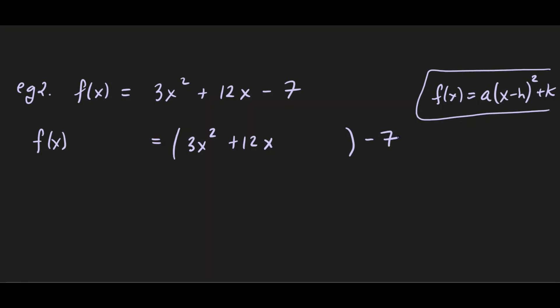We can't complete the square yet because we need to make the coefficient of x² equal to 1. Since it's 3, we have to factor out that coefficient from the first and second terms. Pulling out a 3 gives us 3(x² + 4x), since 3 × 4 = 12. Minus 7 is still outside. Now we're ready to complete the square.